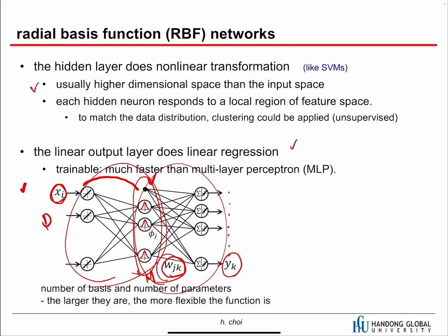This neural network is much faster to train than a multi-layer perceptron. In MLP, both hidden and output layers are trainable, making it hard to train. But in RBF networks, the hidden layer is fixed — given input x, we translate x to the hidden representation, and then we only train the output layer, which is just linear regression. Training the RBF network takes less than one second, even with a lot of data samples.